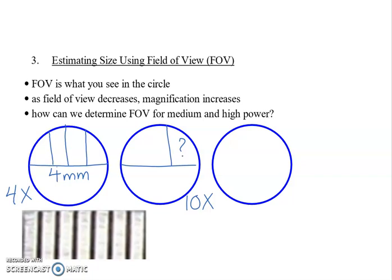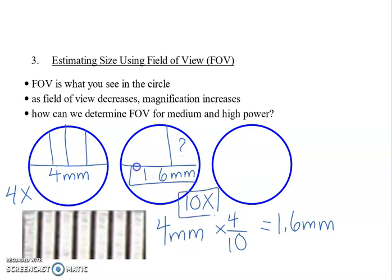Well, we can use the objective lens ratios to mathematically determine the field of view under medium power. 4 millimeters is known at low power 4 times. If I multiply that by the ratio of objective lenses of low power to medium power, I can get the field of view on medium power, which is 1.6 millimeters. Notice the magnification is increasing, but the field of view is decreasing compared to low power.